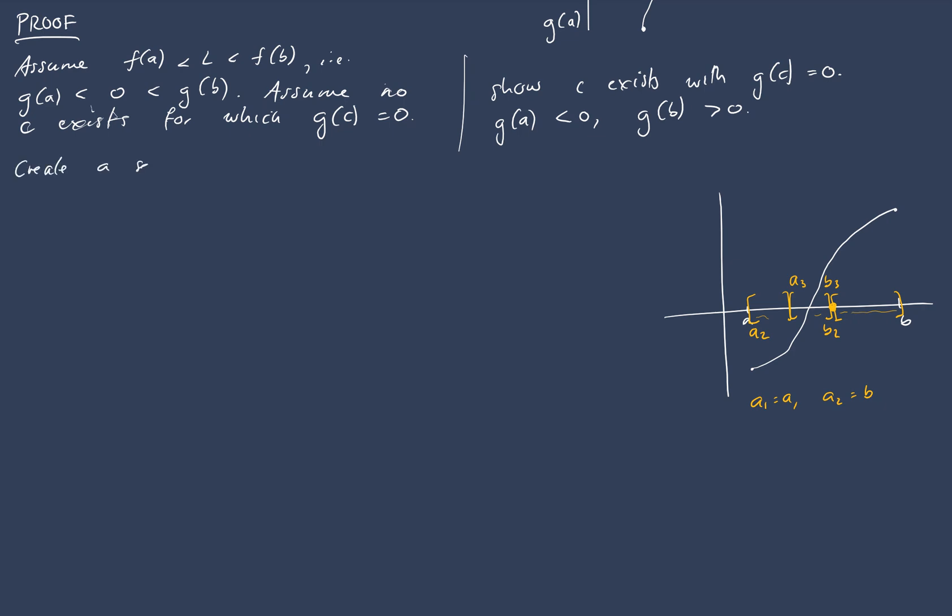Create a sequence of nested intervals [a_n, b_n], halving in size at each step, such that g(a_n) is negative and g(b_n) is positive. So these intervals are getting smaller every time by a factor of 2 and we're guaranteeing the endpoints straddle 0 every single time.